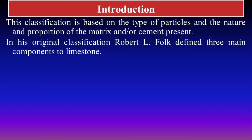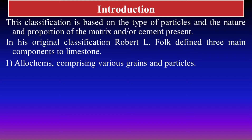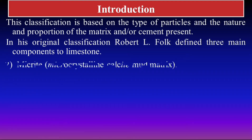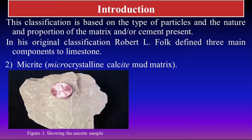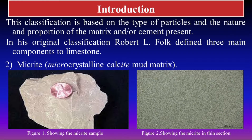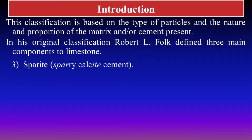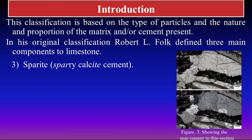According to Folk's classification, limestone has three main components. First are allochems, which I will discuss in the next slides. Second is micrite, which is a mud matrix — we call it microcrystalline calcite. Third is sparite, which is the cement, specifically calcite spar cement. You can see the thin section pictures of both micrite and sparite here.